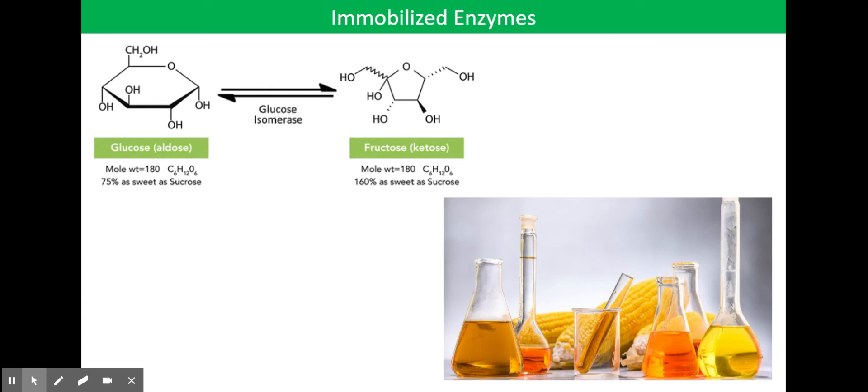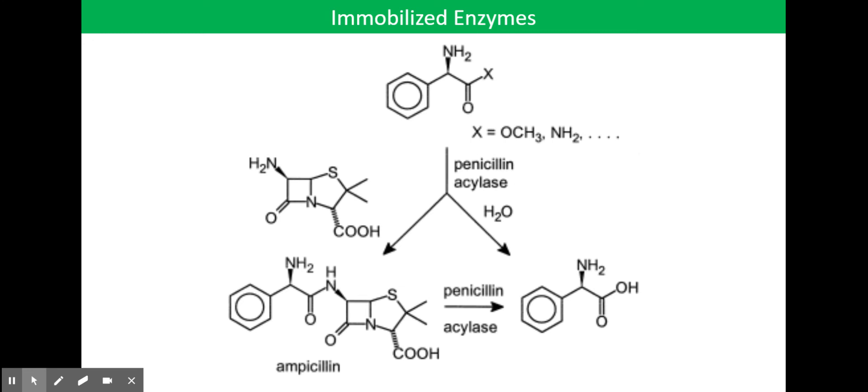Secondly, we have penicillin acylase. Formation of semi-synthetic penicillins, which were first developed during the 1960s, is another example of an industrial use of immobilized enzymes. Some penicillin-resistant microorganisms are not resistant to these semi-synthetic penicillins.